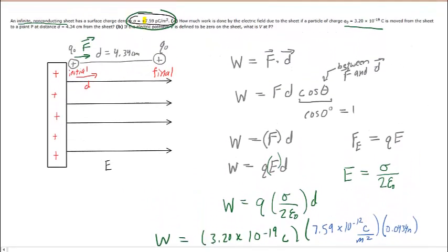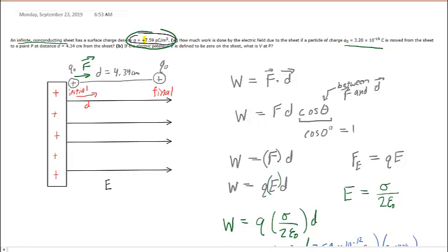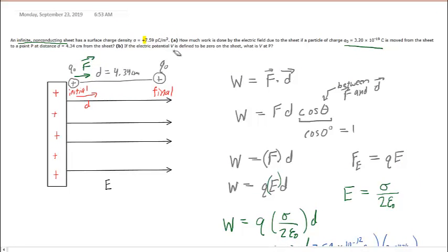Moving back to part B, it says, if the electric potential V is defined to be 0 on the sheet, what is V at point P? Recall that point P is the point to which we had moved that charge Q0.